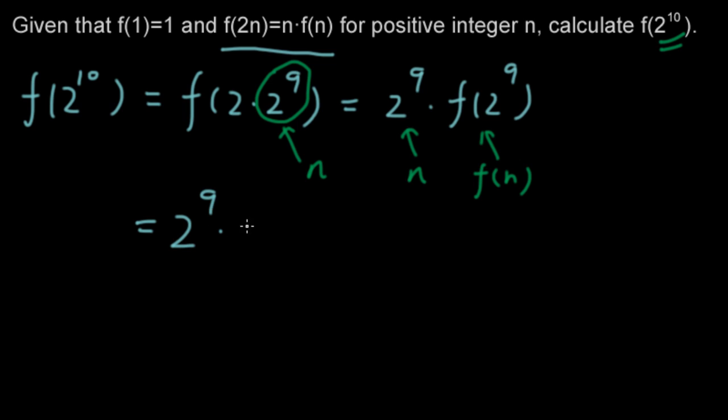2^9 times f of... 2^9 is equal to 2 times 2^8. Now this is the new n. This is equal to 2^9 times... we'll bring this out, 2^8 times f(2^8).